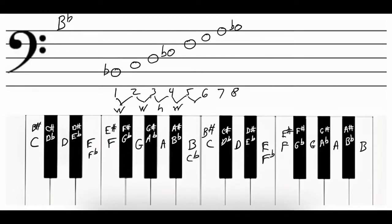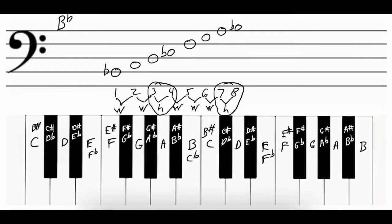The interval between the fifth and the sixth note, F and G, is a whole step. The interval between the sixth and the seventh note, G and A, is a whole step. And the interval between the seventh and the eighth note, A and B-flat, is a half step because they're next to each other. The two places in the B-flat major scale that have half steps are between the third and the fourth note and the seventh and the eighth note — just like in the C major scale.